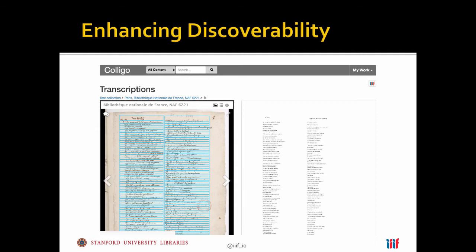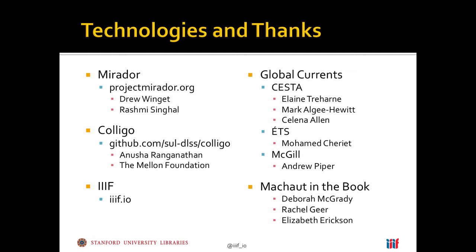That's what we're looking at in the year ahead. I wanted to close by pointing out that none of this happens in a vacuum. The Mirador project—Drew Winget and Rashmi Singhal at Stanford and Harvard have been the primary developers, but it's an open source community and they invite developer participation. The discovery interface was supported by the Mellon Foundation as a prototype, developed by Anusha Ranganathan at Oxford. You can explore more about IIIF at iiif.io. The scholars who produced the data are the Global Currents project, a Digging Into Data grant, and the Machaut and the Book project, supported by the Mellon Foundation.